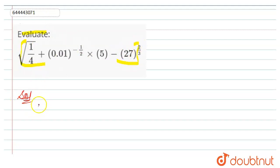Write the given expression here: square root of 1 by 4 plus 0.01 raised to power minus 1 by 2 into 5 minus 27 raised to power 2 by 3.